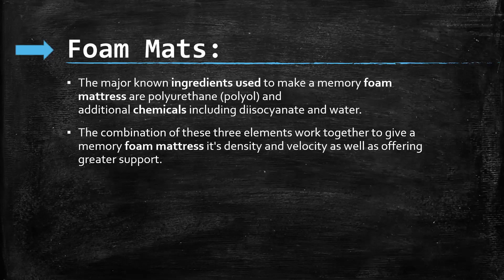The fourth topic is polyurethane. The major ingredients used to make memory foam matrices are polyurethane and additional chemicals including diisocyanate and water. The combination of these three elements works together to give a memory foam matrix its density and viscosity, as well as offering great support.